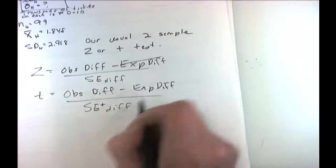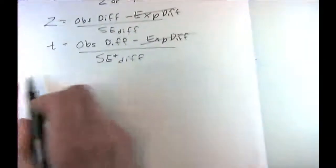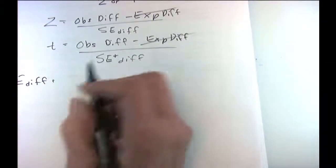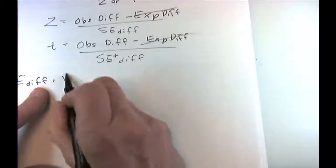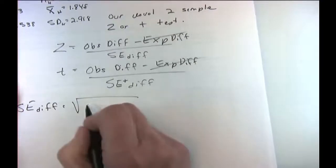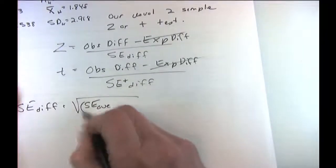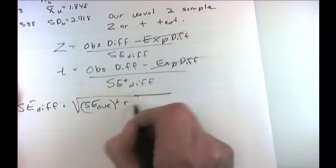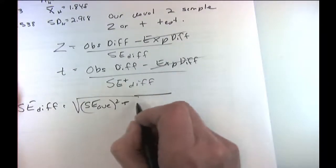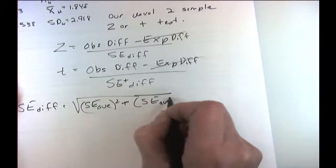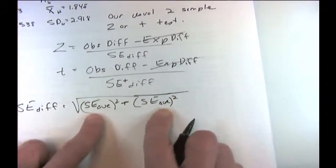The observed difference is 3.643 minus 1.848 equals 1.795. The T statistic is 1.795 divided by 0.4717, which gives T equals 3.804.